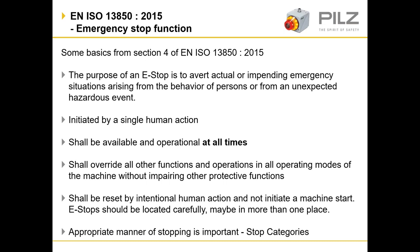Emergency stops shall be reset by intentional human action and shall not initiate a machine start. Emergency stops should be located carefully, maybe in more than one place. Once the emergency stop is twisted and released, this cannot be automatic — this must require a machine reset and then a machine start signal following the reset. Emergency stop actuation needs to be investigated as this should indicate an emergency situation. Resets need to be in sight of where the e-stop was actuated to ensure it is safe to reset and restart the machine.